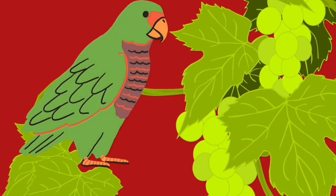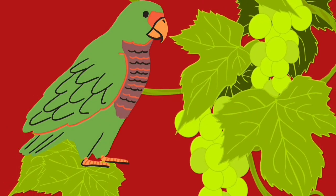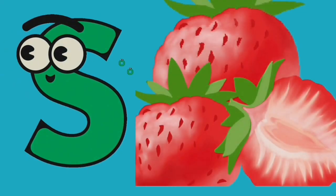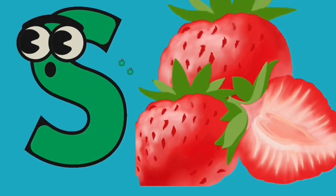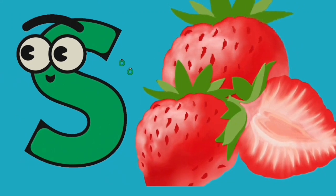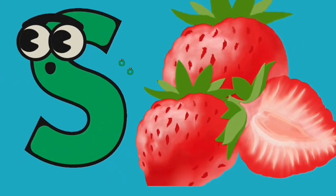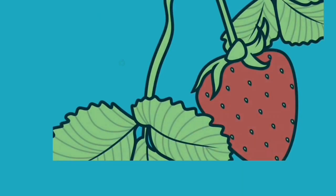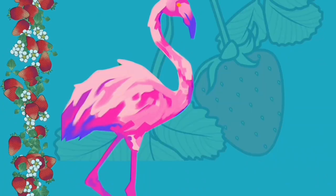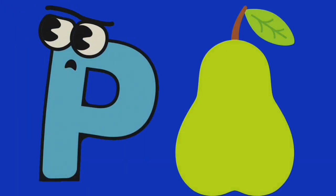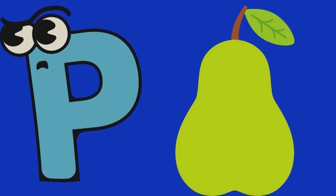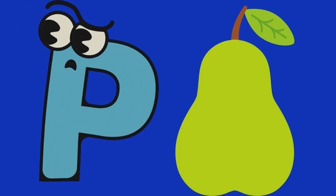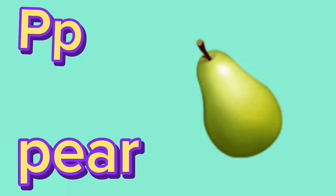A parrot tries to eat grapes. S for Strawberry. Its color is red. It starts with the letter S. Here is the strawberry tree. A flamingo wants to eat strawberry. P for Pear. Its color is green. It starts with the letter P.